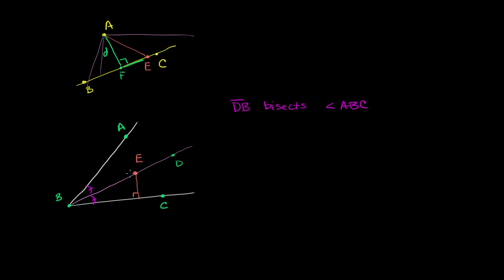This is one distance, and this is the other distance. This orange line is the distance between E and BC, and this orange line is the distance between E and BA. What I want to prove is that these distances are equal.